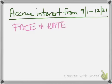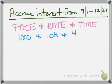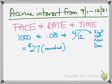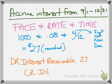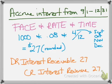We calculate how much interest we've earned: face amount times rate times time, so $1,000 times 8% times 4/12 — covering September, October, November, and December. That gives us $27 of interest, rounded. We record the adjustment as a debit to interest receivable for $27, adding to our assets and showing that we are owed interest, and a credit to interest revenue for $27 — one balance sheet account and one income statement account, increasing both our profits and our assets by $27.